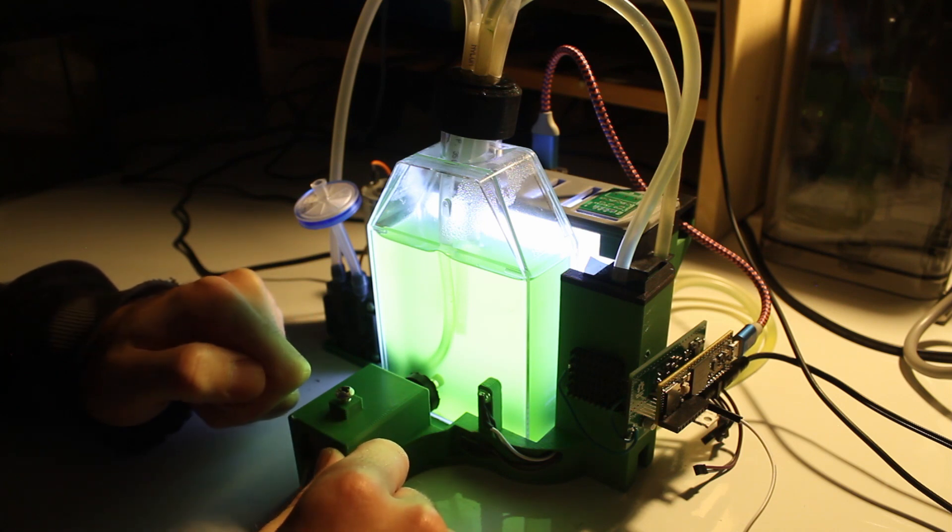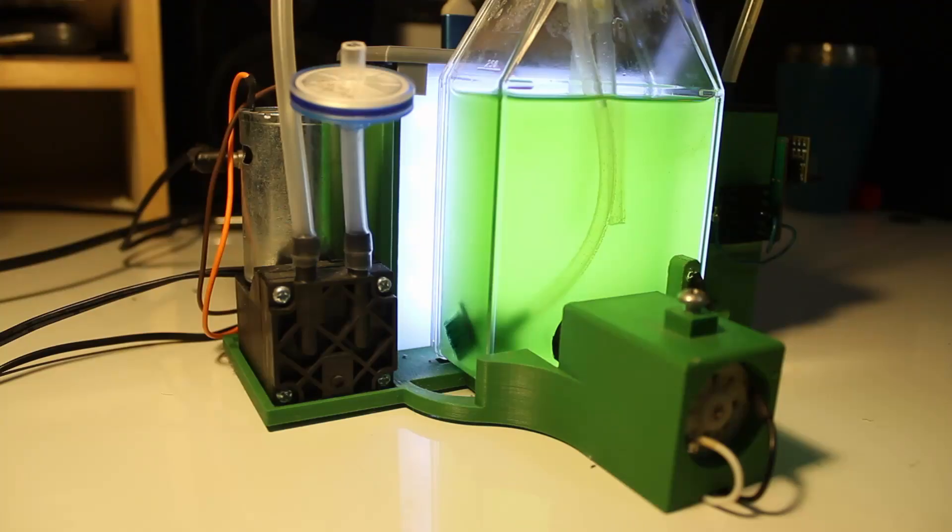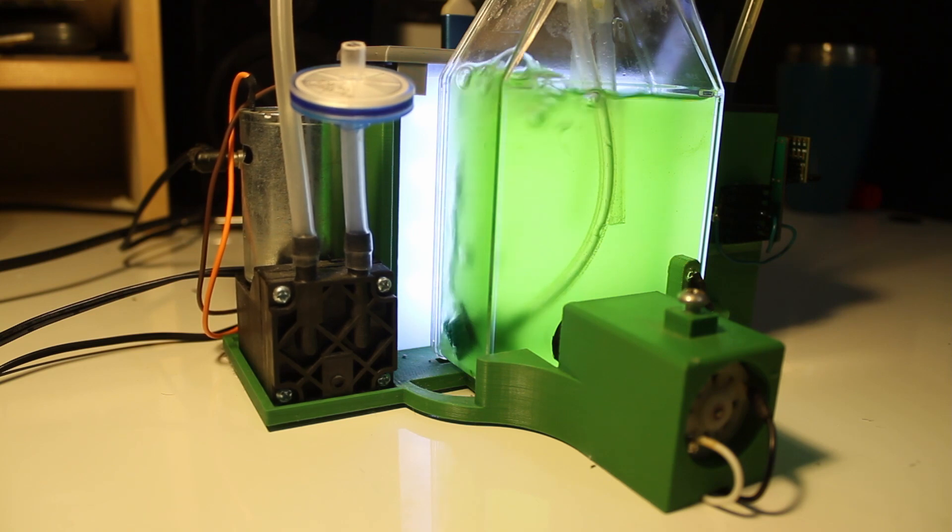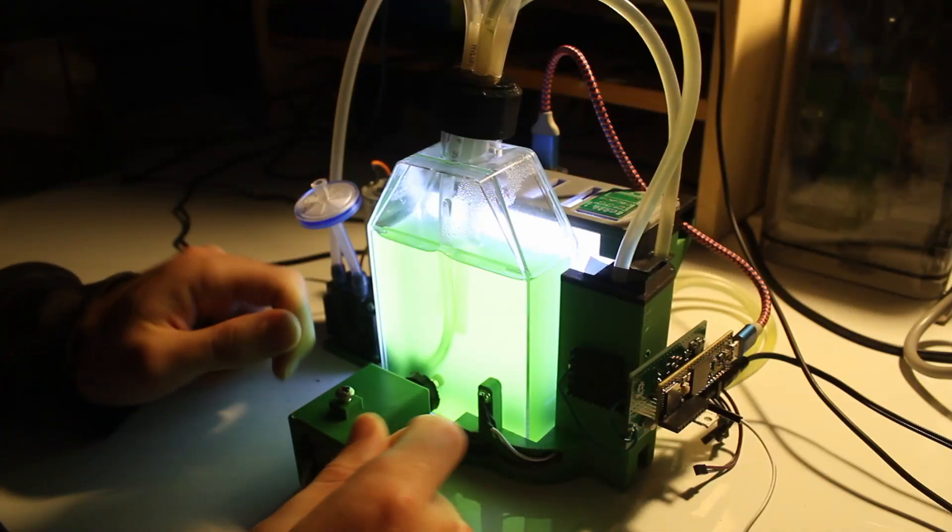An important part of cultivating microalgae is the addition of CO2 for photosynthesis. So on the left hand side here we have an air pump which basically pumps air into the main culture vessel at whatever intervals you want.